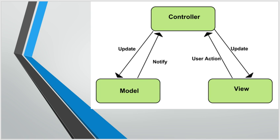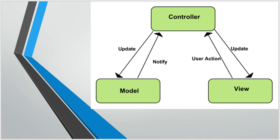This is typically handled by the controller. When a user performs an action on the view — such as a click on a link, a click on a button, adding text into a text input or text area, or selecting a dropdown — the controller starts working. An event on the view triggers a function in the controller, where the domain logic is written.